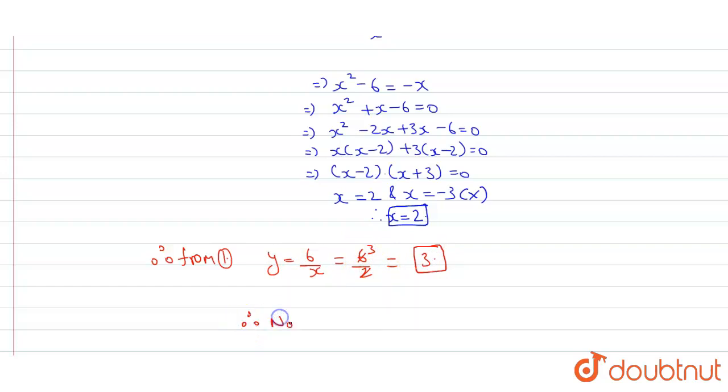Therefore, the number is 10x plus y, which is 10 times 2 plus 3, equals 20 plus 3. That is 23. Our number is 23.